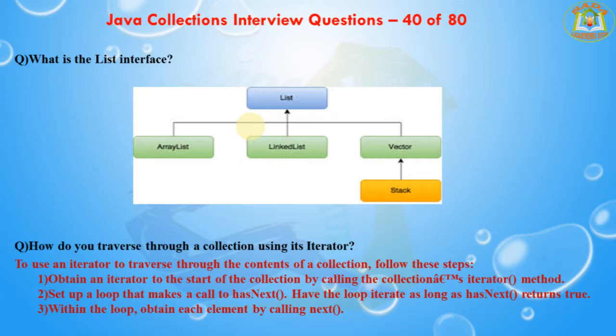The next question is: how do you traverse through a collection using its iterator? To use an iterator to traverse through the contents of a collection, follow these three steps: first, obtain an iterator to the start of the collection by calling the collection's iterator method; second, set up a loop that makes a call to hasNext; third, have the loop iterate as long as hasNext returns true. Within the loop, obtain each element by calling the next method.